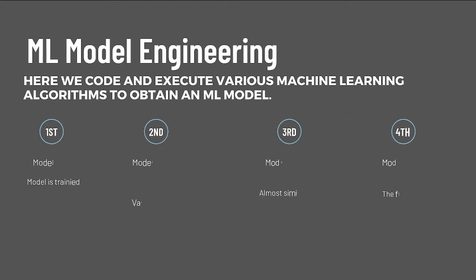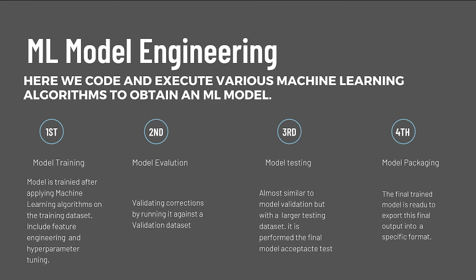Now let's look at the next stage of the ML workflow, which is ML model engineering. In this stage, we code and execute various machine learning algorithms to obtain an ML model. A typical ML model engineering pipeline consists of four steps. First is model training, where we train the model after applying machine learning algorithms on the training dataset. This also includes feature engineering and hyperparameter tuning, which we will cover in depth in a separate video.